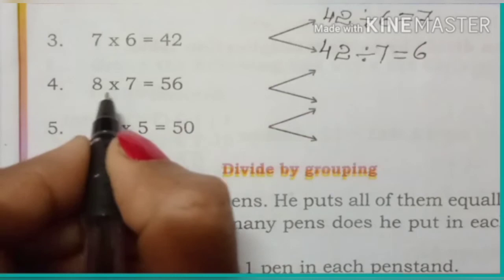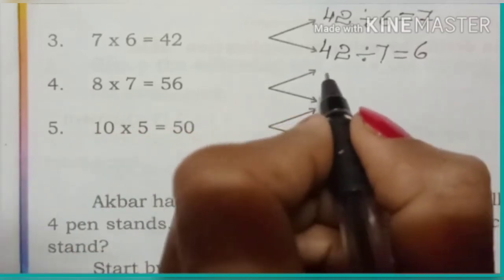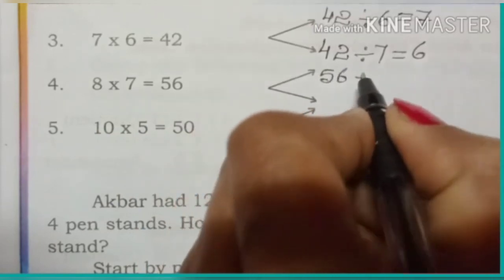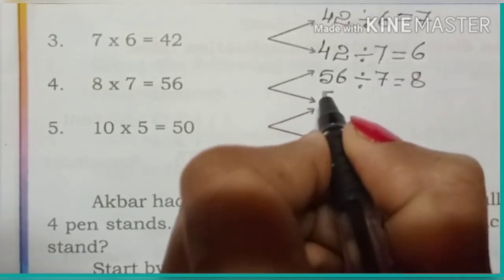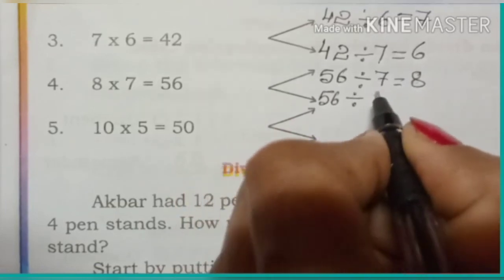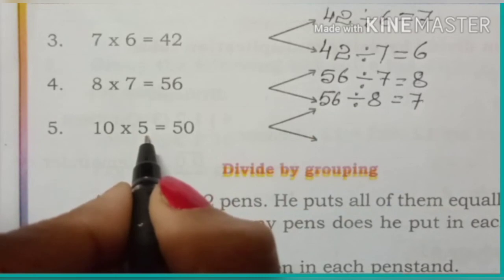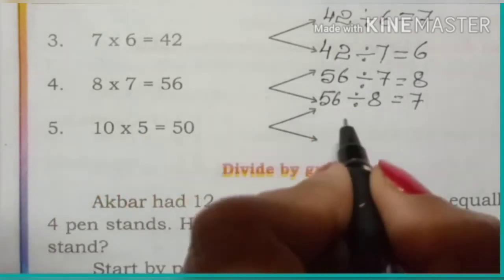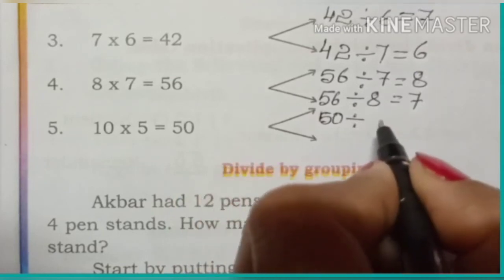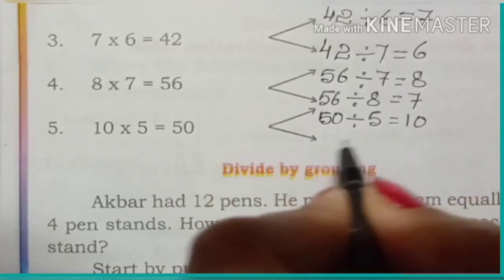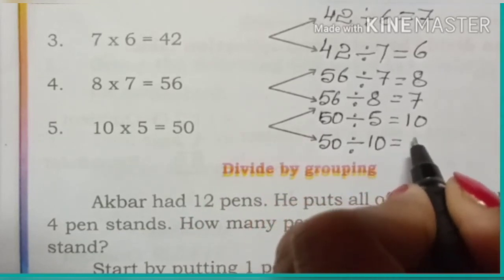Fourth question: 8 multiplied by 7 is equal to 56. Write the division form: 56 divided by 7 is equal to 8, and 56 divided by 8 is equal to 7. Fifth question: 10 multiplied by 5 is equal to 50. Division form: 50 divided by 5 is equal to 10, and 50 divided by 10 is equal to 5.